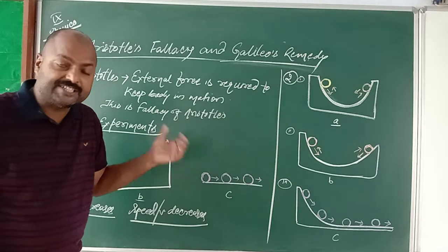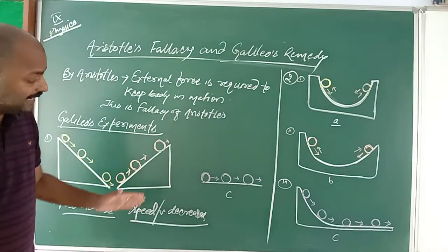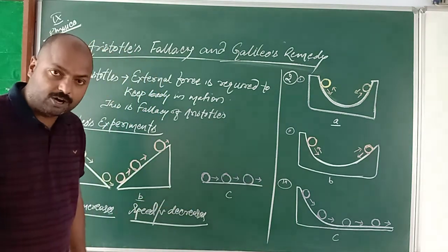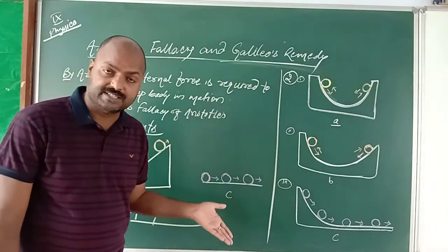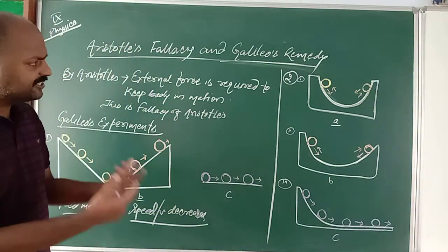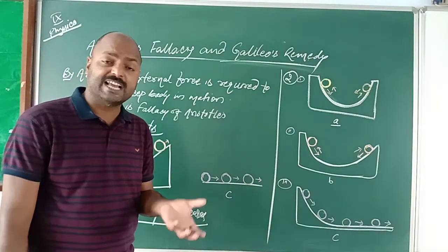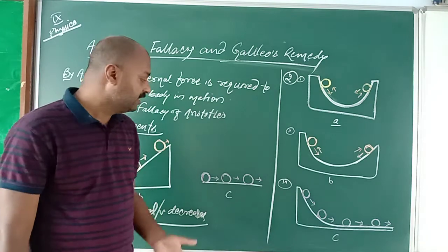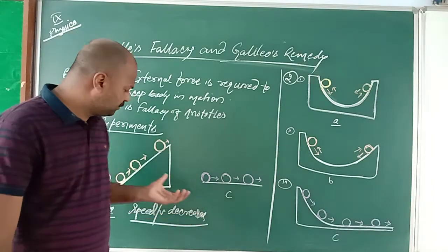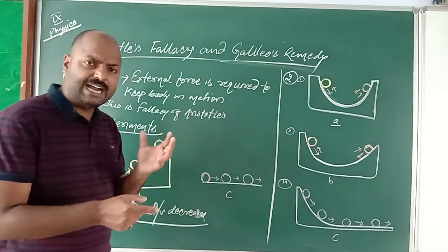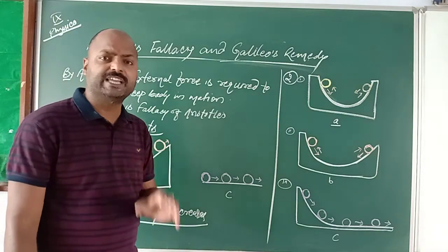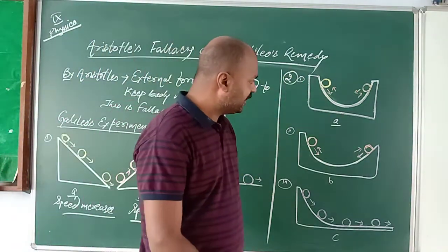The ball eventually comes to rest when thrown upward. But in the third experiment, when he took a horizontal surface and rolled the ball, he observed that the ball covers a long distance and keeps on moving. He then wanted to check whether external force is really essential to keep any body in motion. He observed that at different angles, different forces act, and there is something that opposes the motion of the body. At other times, no external force is needed to keep the body in motion.